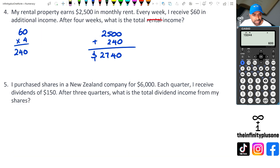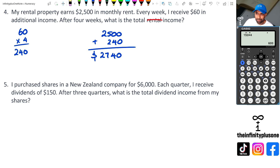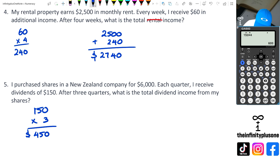For question five, we've purchased shares in an NZ company for $6,000. Each quarter I receive a dividend of $150. After three quarters, what is the total dividend? Now, when you're getting dividends, you're not getting that $6,000 back — you've already purchased the shares. So the total dividend income is just $150 times three, which is $450. It's easy to mistakenly go $6,000 plus $450, so just be careful and make sure you read the question.